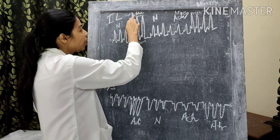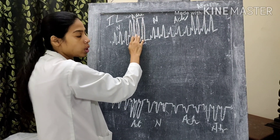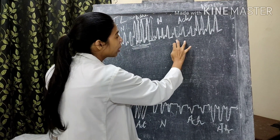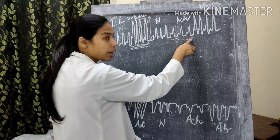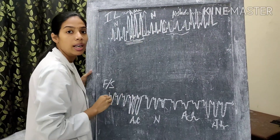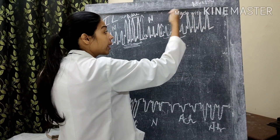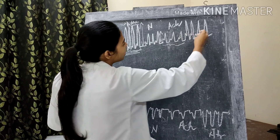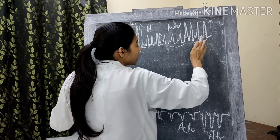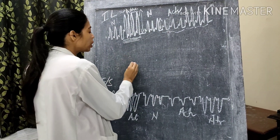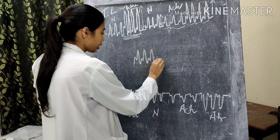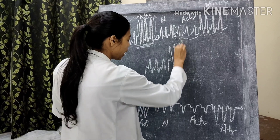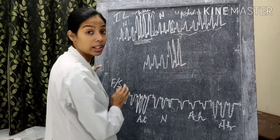First, we come to adrenaline. For adrenaline, you see both the force as well as the heart rate is increasing. Now, if you come to acetylcholine, the heart rate is decreasing as well as the force of contraction is also decreasing. But if you give atropine directly after giving acetylcholine, we find that more or less it is similar to the normal cardiogram - there is a slight increase in the force of contraction and slight increase in the heart rate. But if you take a normal cardiogram and then give atropine, you will find a great increase in force as well as the heart rate.